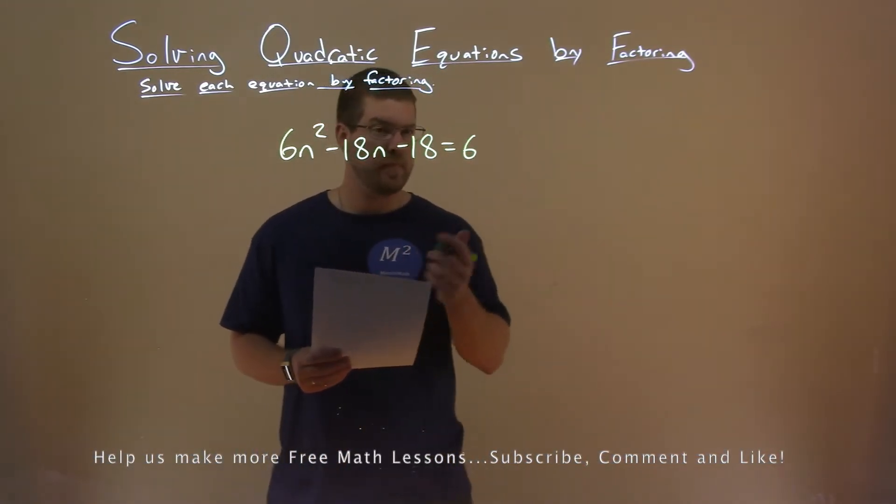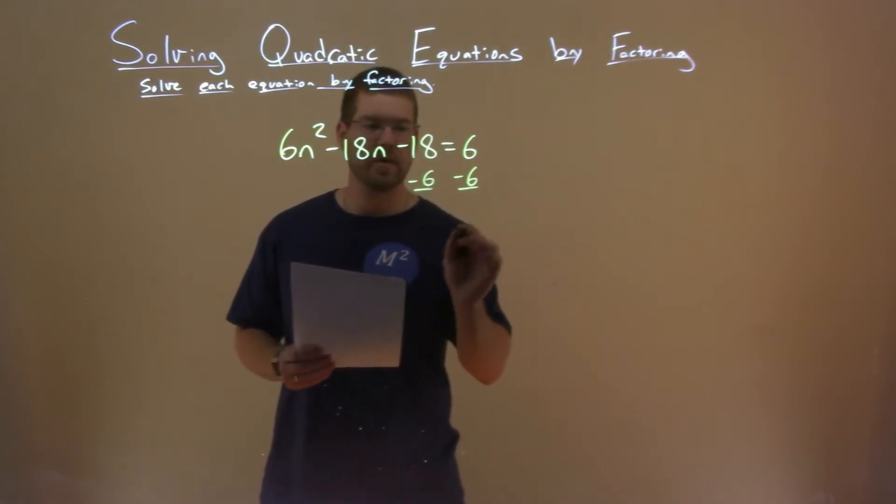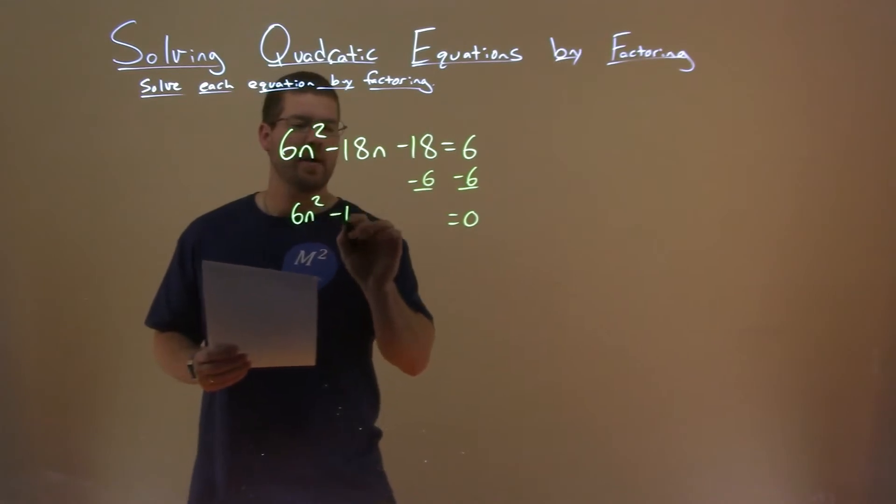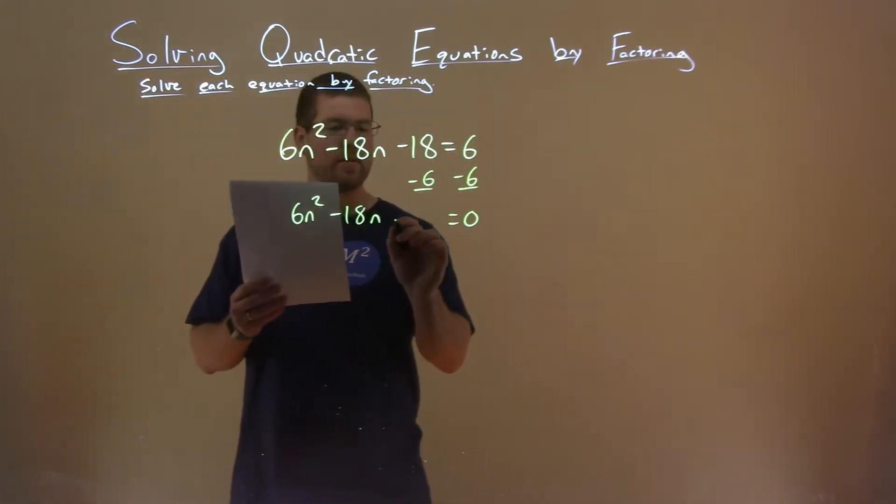Well, we need our equation to equal 0, so to do that I subtract a 6 from both sides. That makes it equal to 0 and we're left with 6n squared minus 18n, and then negative 18 minus 6 is a minus 24.